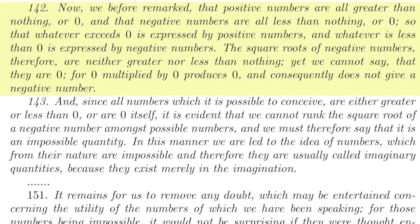The square roots of negative numbers, therefore, are neither greater nor less than nothing. Yet we cannot say that they are zero, for zero multiplied by zero produces zero, and consequently does not give a negative number. And since all numbers which it is possible to conceive are either greater or less than zero, or are zero itself, it is evident that we cannot rank the square root of a negative number amongst possible numbers. And we must therefore say that it is an impossible quantity. In this manner, we are led to the idea of numbers, which from their nature are impossible, and therefore they are usually called imaginary quantities, because they exist merely in the imagination.